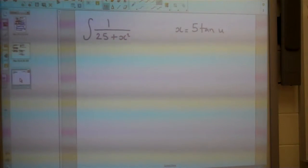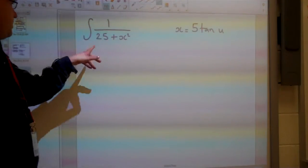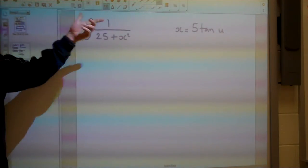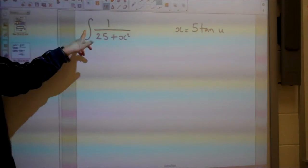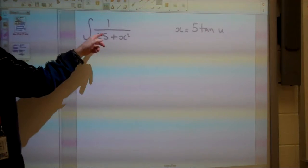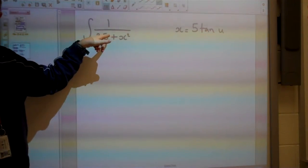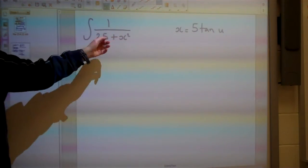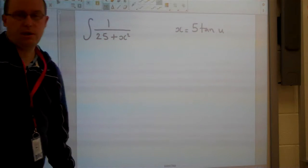Now your third major one to do with trig is what happens if we have, and it's another fraction, and it's another one with x squared, but a couple of differences. One, there's no square root this time, and the second one is instead of being subtract, I actually get plus. Now for this type of question, this is when we're going to use a substitution of tan.